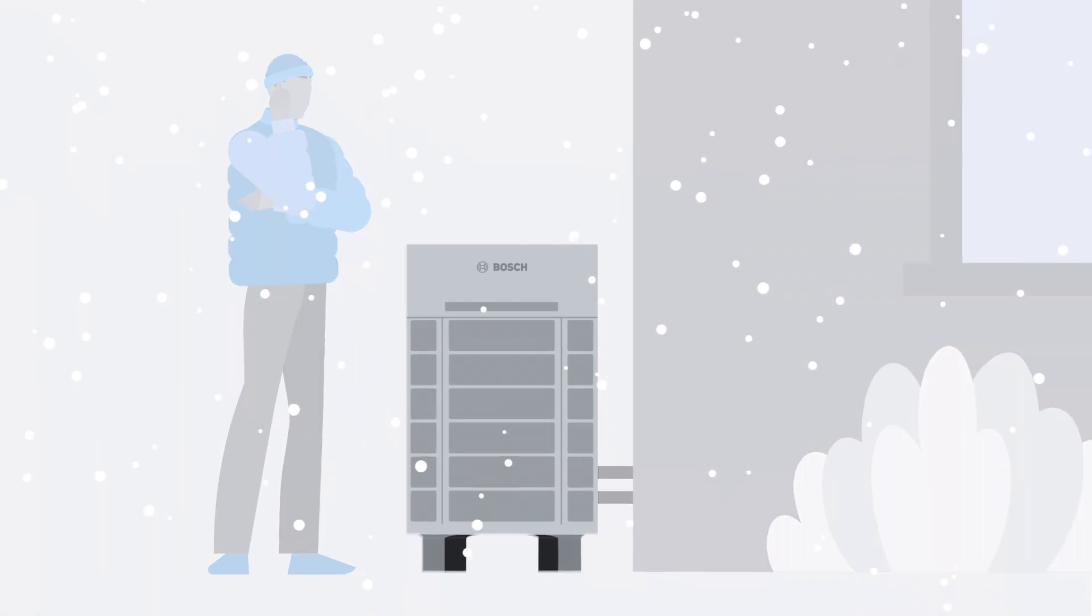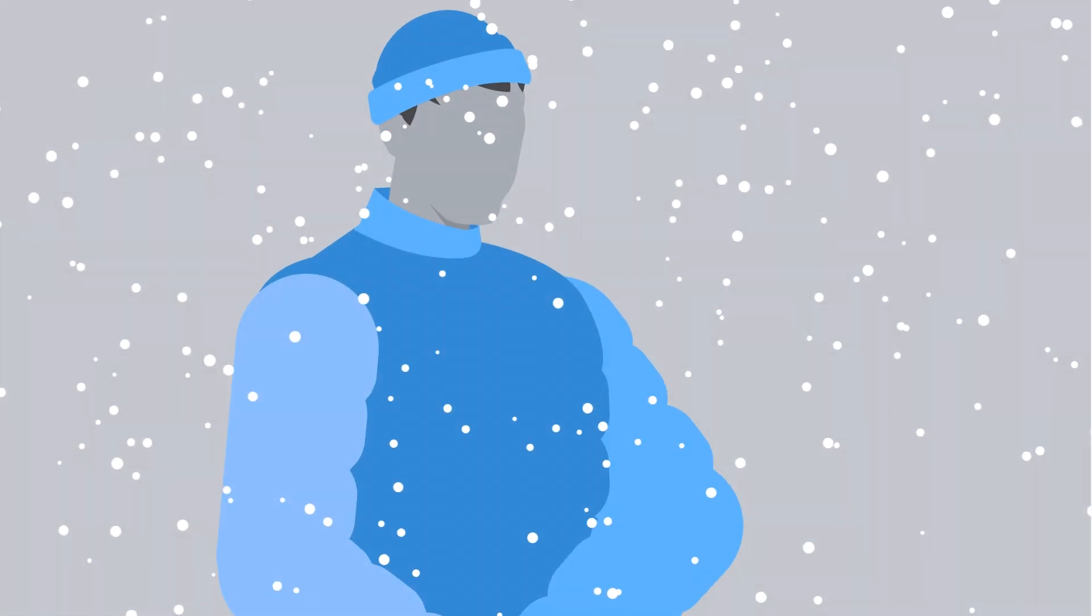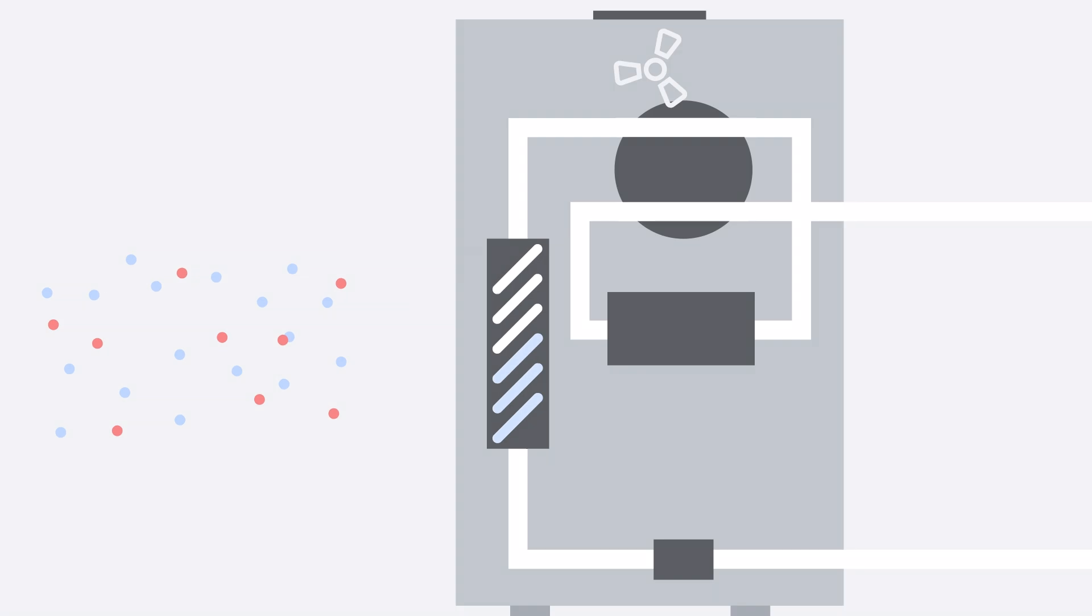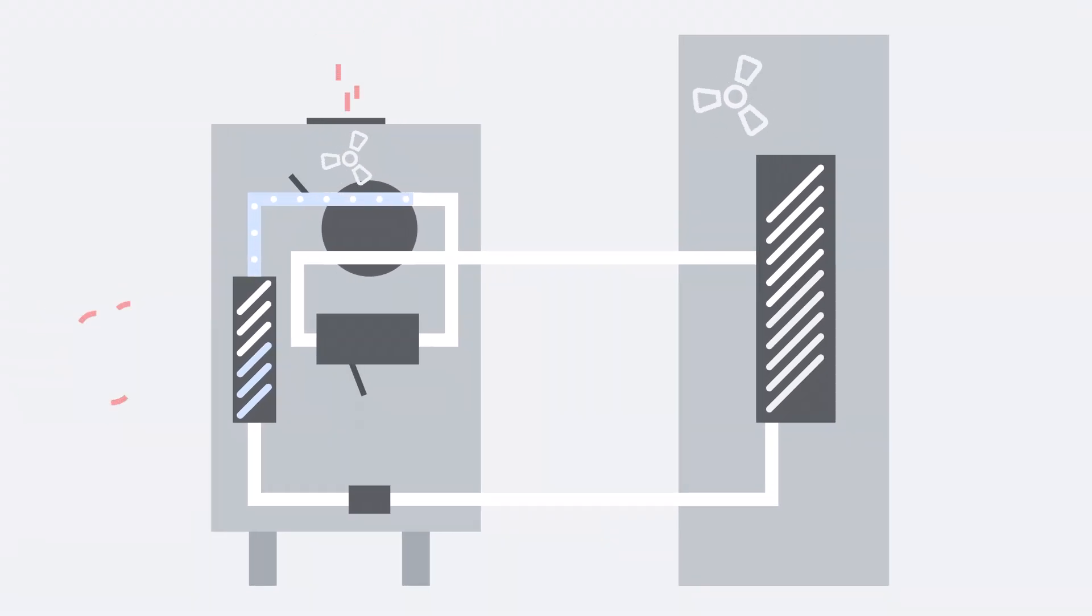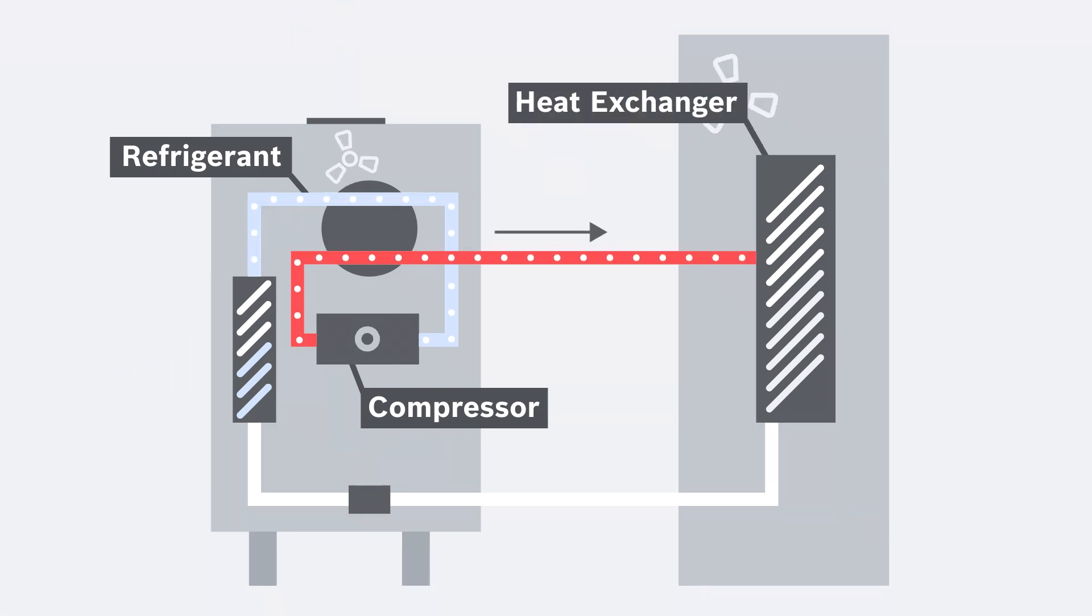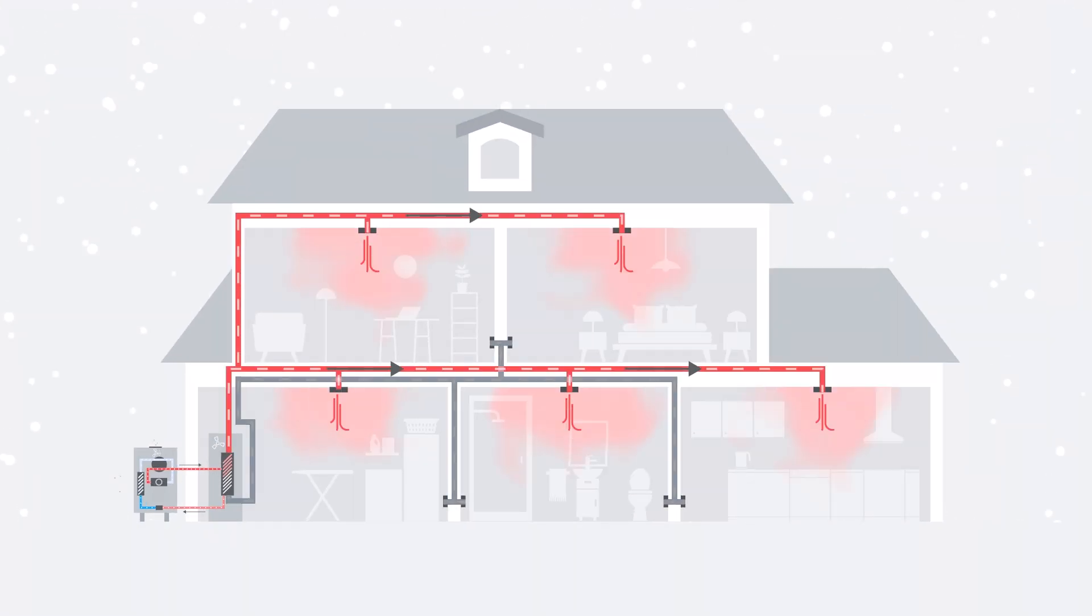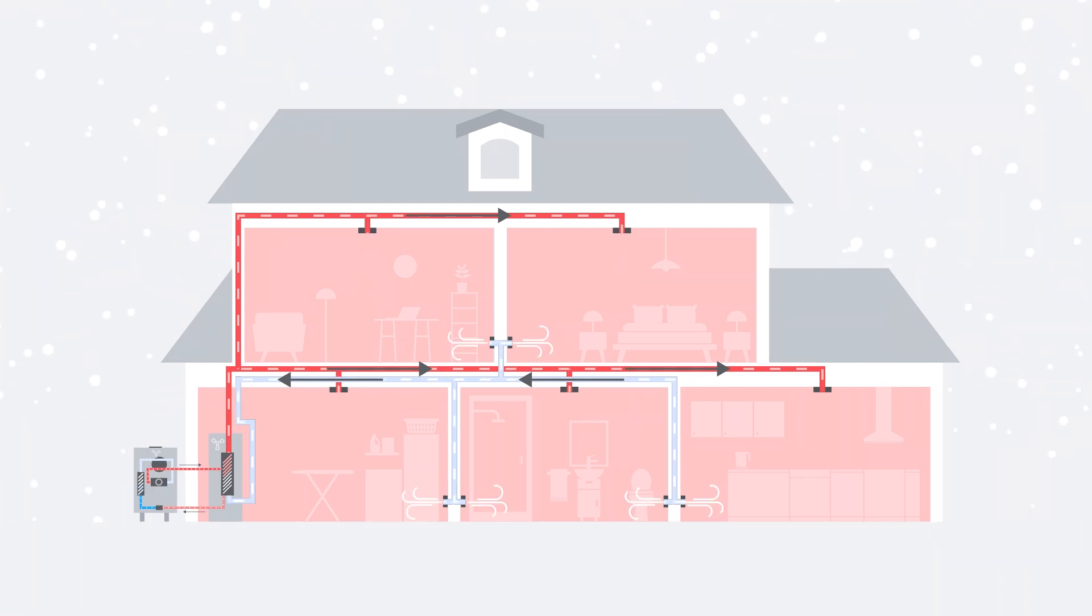In winter the outdoor unit absorbs the remaining heat that exists in cold air. Yes, even the coldest air contains some heat and Bosch efficiently captures that energy into the refrigerant. The refrigerant gets compressed to increase its temperature even more and releases it at the heat exchanger in the air handler inside the home, which in turn distributes that warm air through the whole home for cozy warm indoor temperatures.